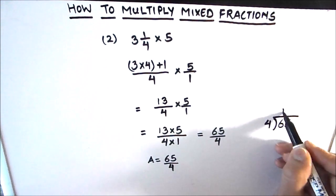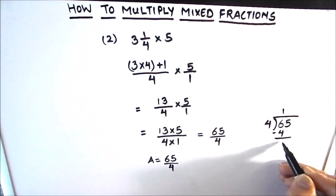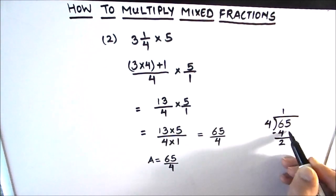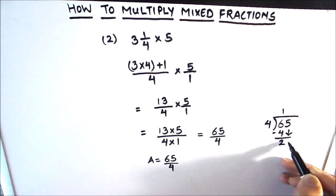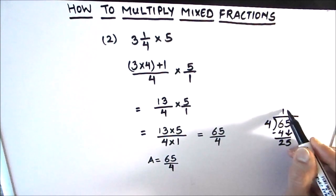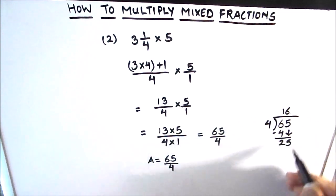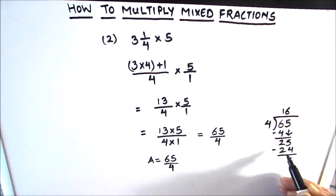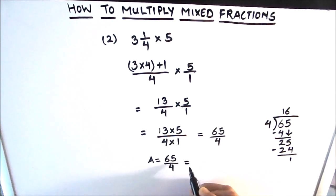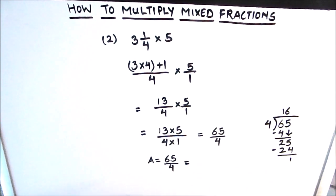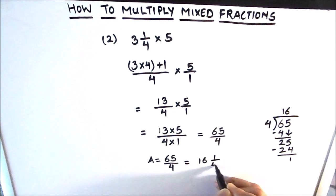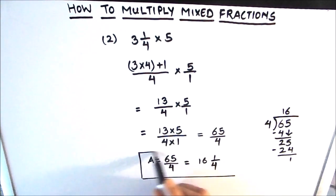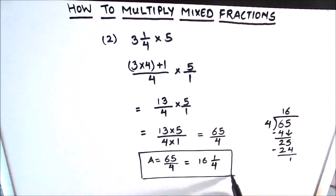We can even convert 65 upon 4 into a mixed fraction by dividing by 4. 4 times 1 is 4, remainder is 1; drop down the 5 to get 15 — but wait, 4 times 6 is 24 and the remainder is 1. So our mixed fraction equivalent to 65 upon 4 is 16 and 1 upon 4. This is going to be our final answer.